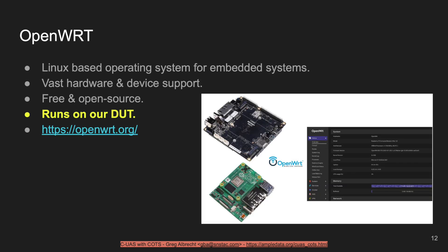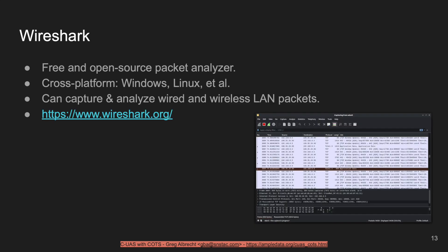On the device, what allows us to put it into monitor mode is the OpenWrt firmware — a Linux-based operating system for embedded systems with a vast array of hardware and device support. It's free and open source and runs on our device under test. You can find more about OpenWrt and the installation process at openwrt.org. We'll use Wireshark to analyze the data — a free and open source, cross-platform packet analyzer that runs on Windows, Linux, and other operating systems, capable of capturing both wired and wireless LAN packets.